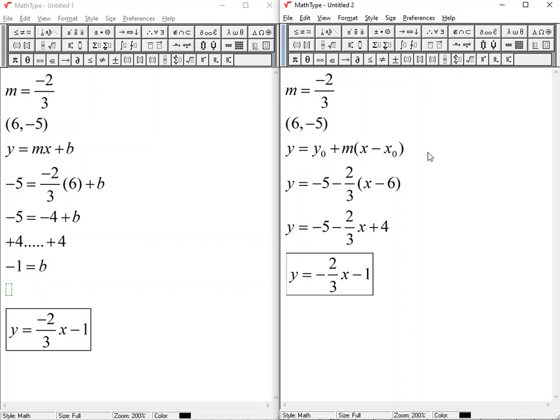If I use point slope form, x and y stay letters, but x naught, y naught become the ordered pairs. And this doesn't give me b alone. It's part of the equation obviously, but it gives me the equation as its end result. So both can be used to achieve the equation of the line.